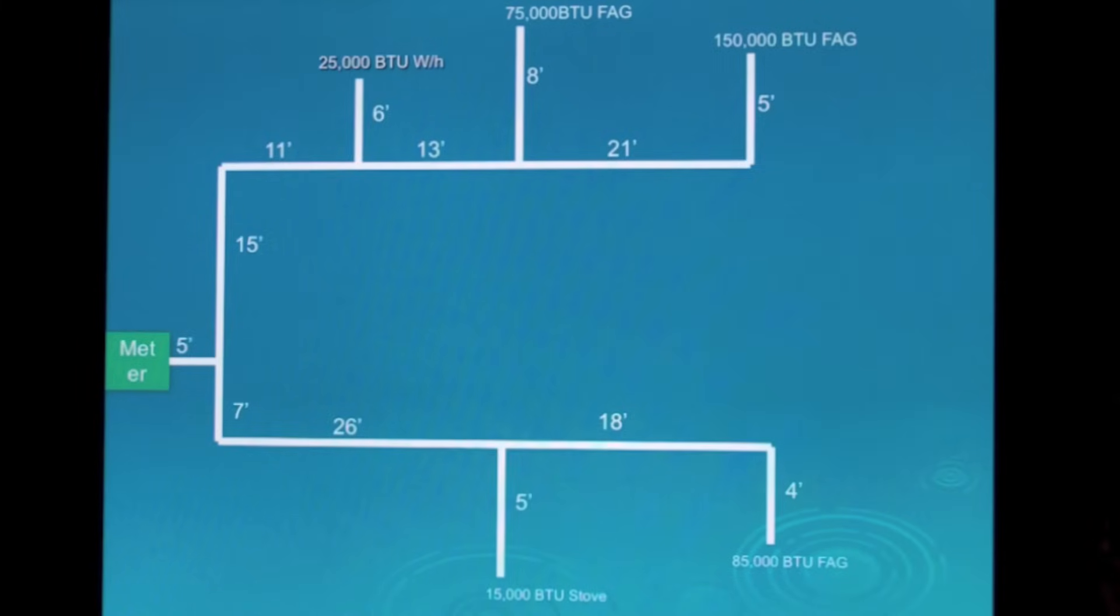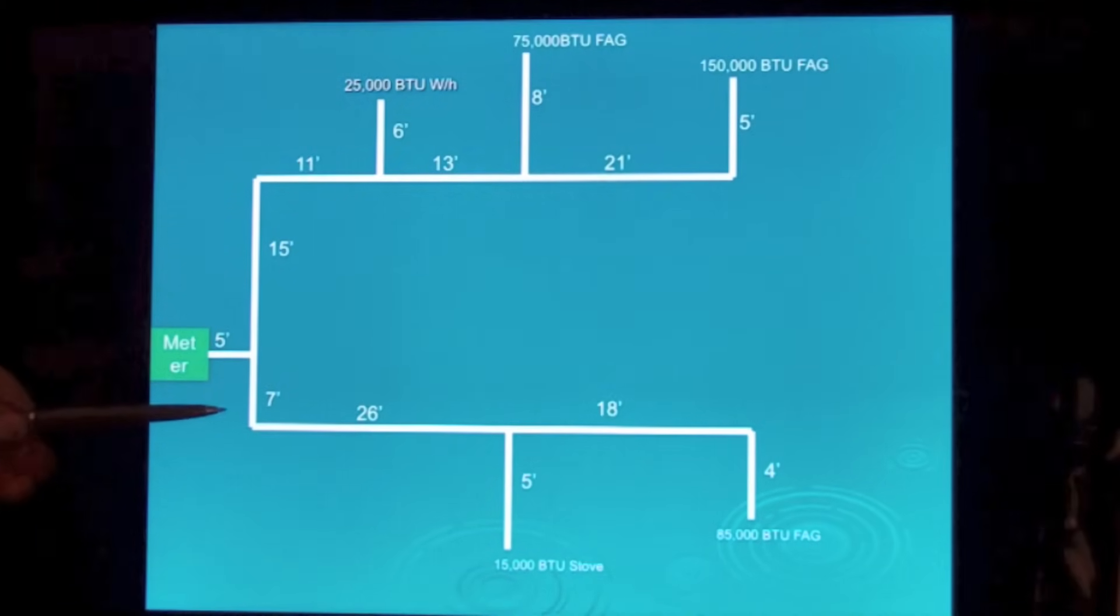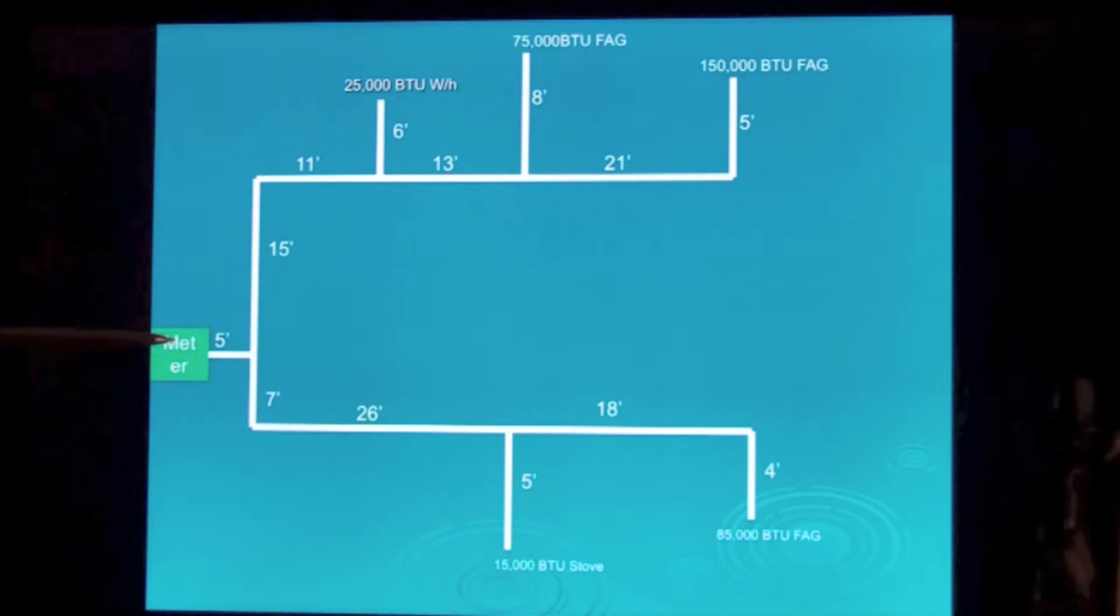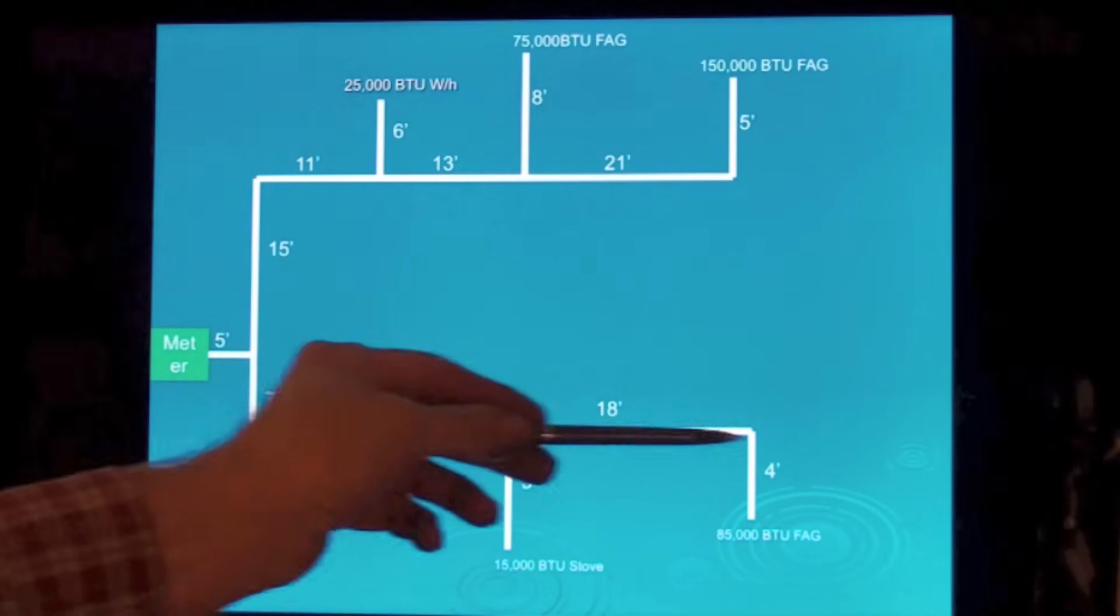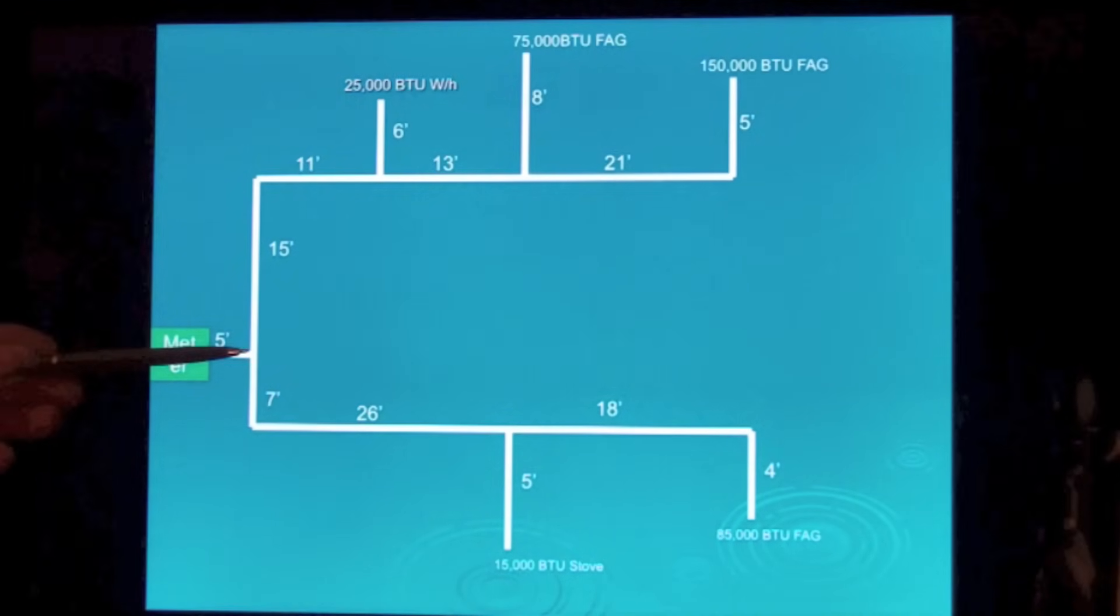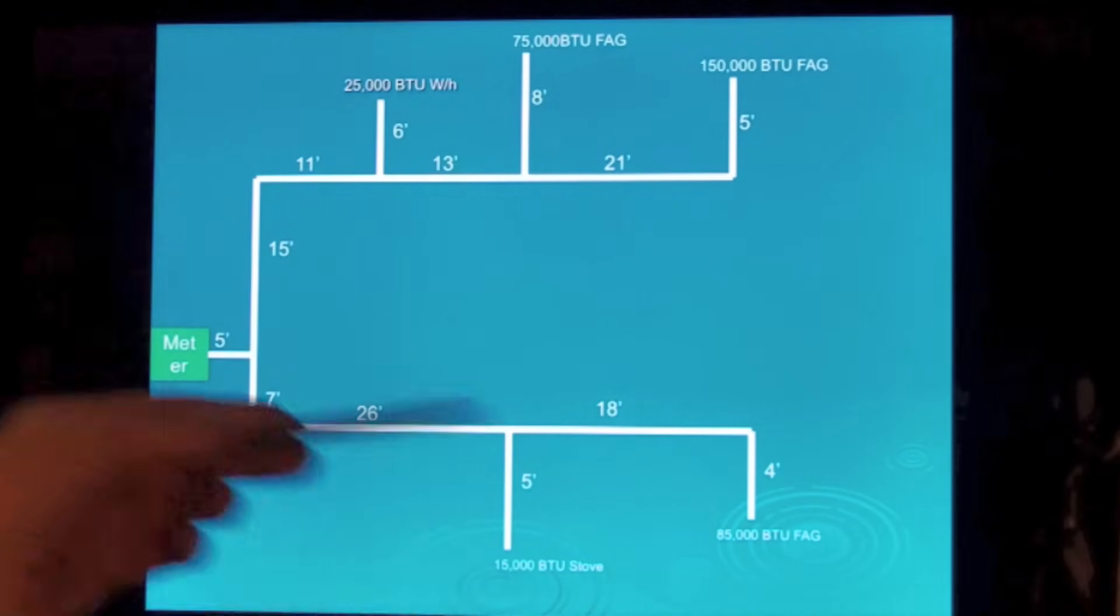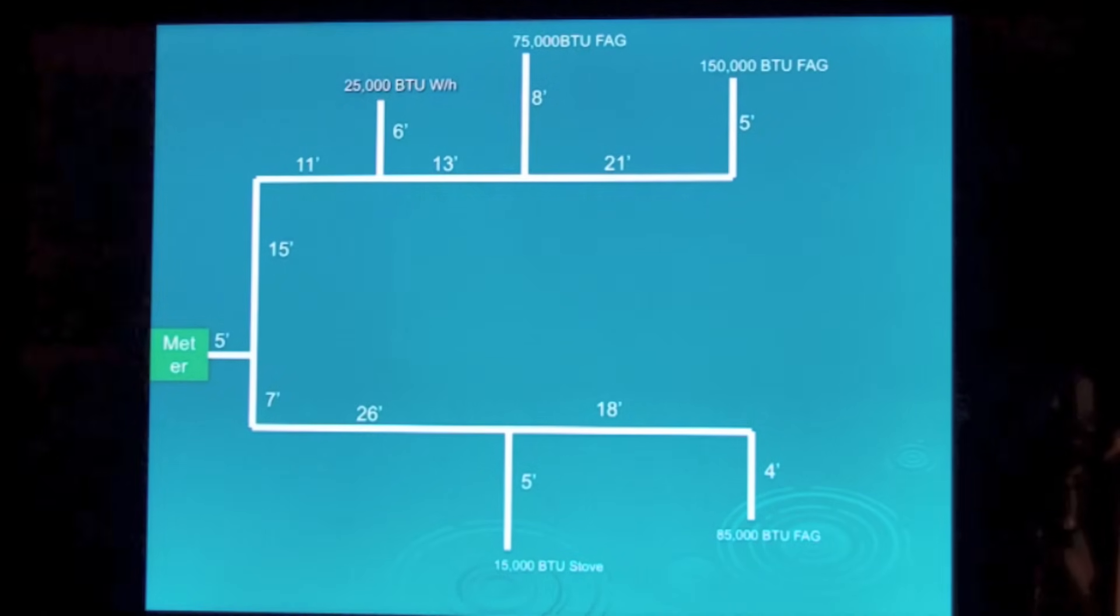When we look at this we see that we have a meter here and we've got two branch lines, one up here and one down here. We've got a five foot run out to the branch lines and then we have each of these distances to the different appliances. We're going to size the pipe for all these branches and drops.